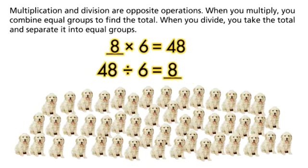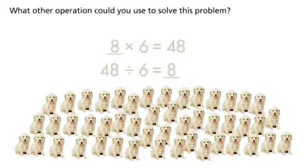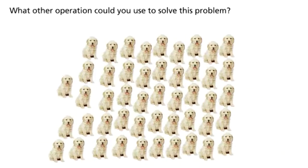Multiplication and division are opposite operations. When you multiply, you combine equal groups to find the total. When you divide, you take the total and separate it into equal groups. What other operation could you use to solve this problem?